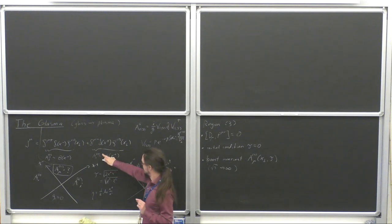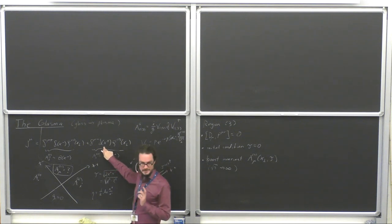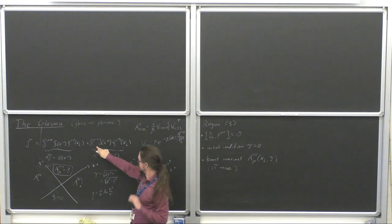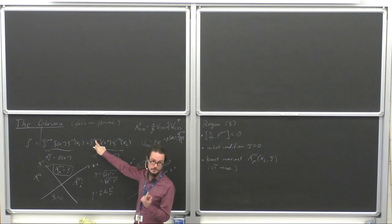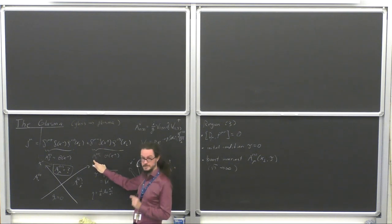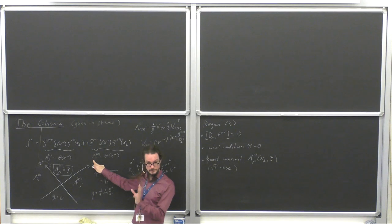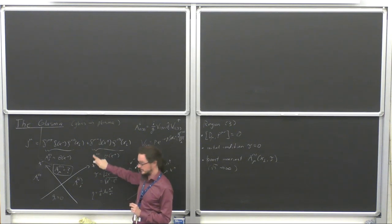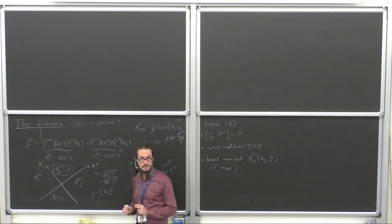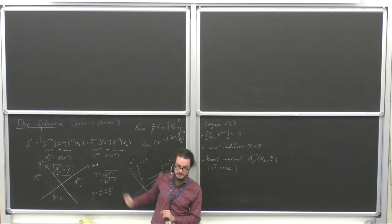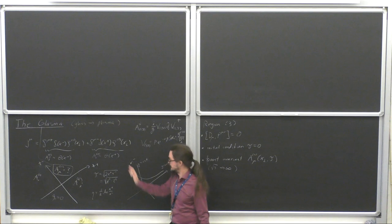So there is a solution of the Yang-Mills equation — the equation of motion — that from this current gives such a field. That's already after the gauge transformation we did yesterday. We are not working completely after the gauge transformation.